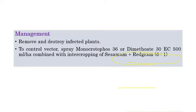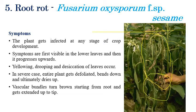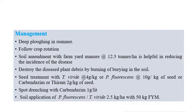The fifth disease is root rot, caused by Fusarium oxysporum f. sp. sesami. This root rot can infect the sesame plant at all stages of crop development. Symptoms include rotting of the stem and root region. On the leaves, drooping, desiccation, and yellowing can be observed. Splitting open the stem reveals that the vascular bundles turn black. Sclerotia can also be observed in later stages, as the disease is caused by Fusarium oxysporum.